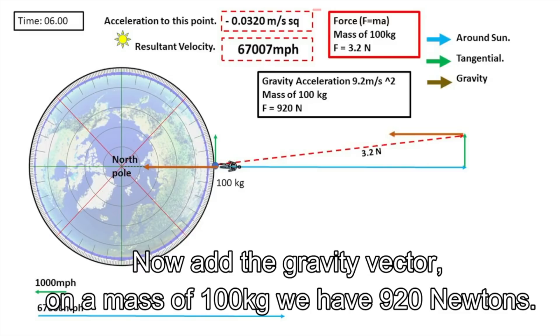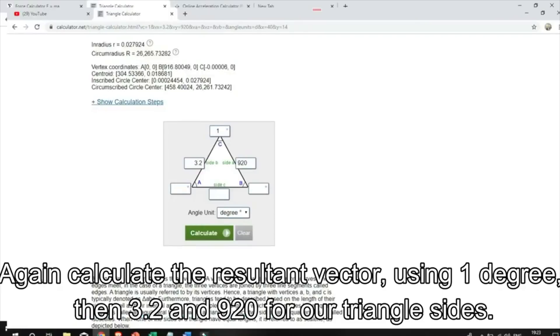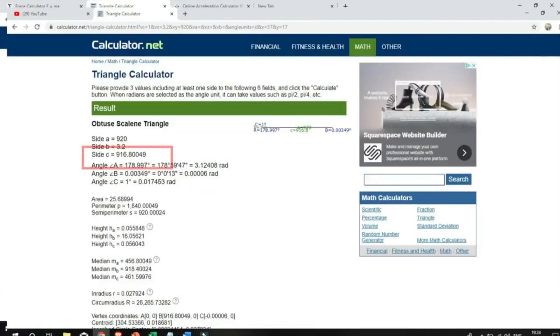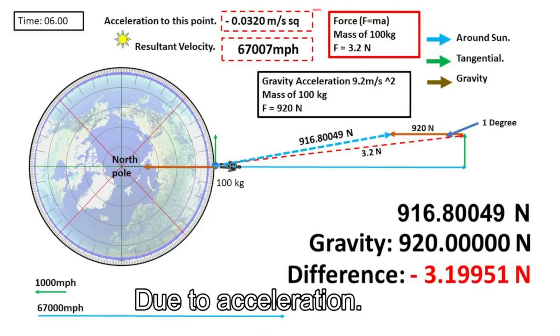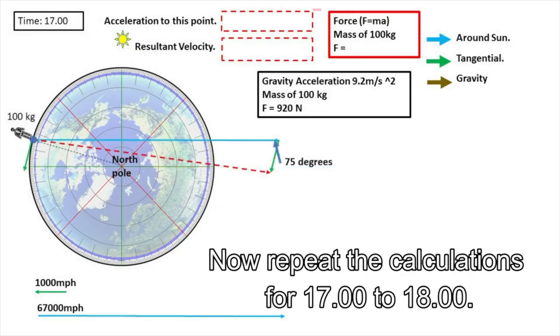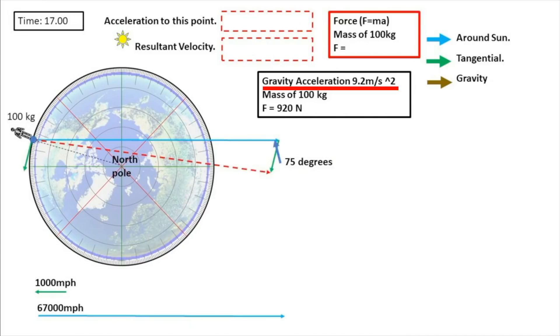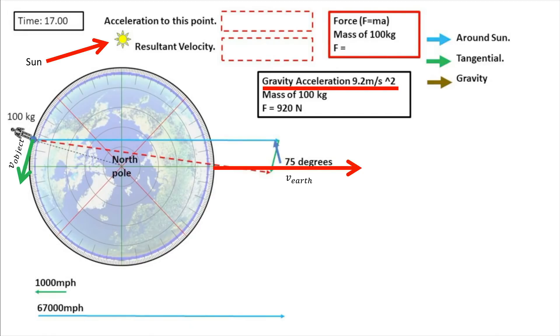We get a force value of 3.2 Newtons. Now add the gravity vector on a mass of 100 kilograms - we have 920 Newtons. Again calculate the resultant vector using one degree, then 3.2 and 920 for our triangle size, giving a reduction in force of 3.199 Newtons from gravity at 920 Newtons due to acceleration. Now repeat the calculations for 1700 to 1800 hours. Enough of this nonsense - since he can't even Google the correct value for gravitational acceleration, let's take a look at all the accelerations involved. The sun is up here, and the tangential velocity of the Earth due to its orbit is in this direction. Chris tries to take the vector sum of these at different times and divides the difference over the time between them to get the acceleration, but there are huge problems here.